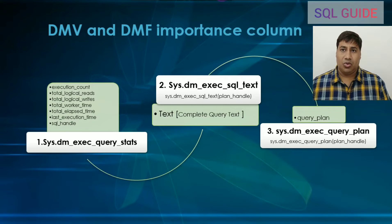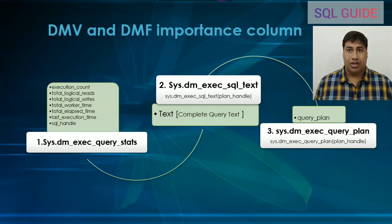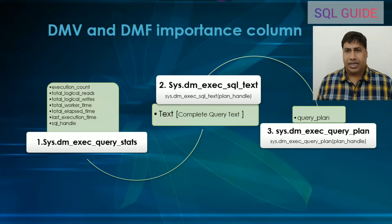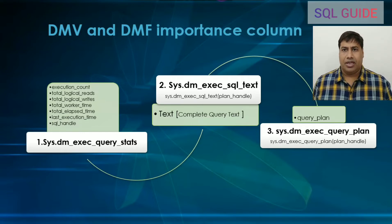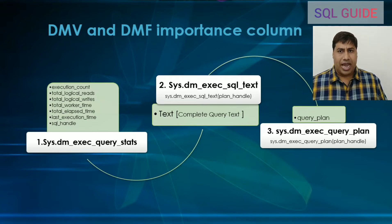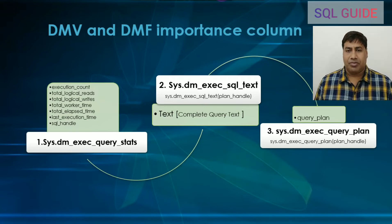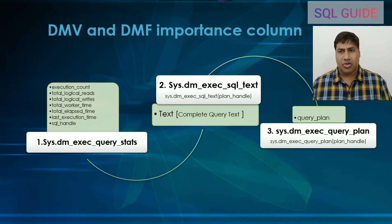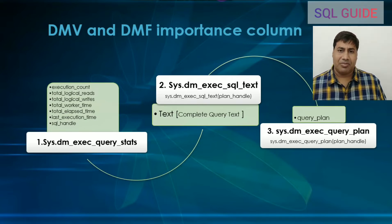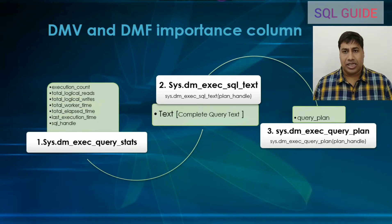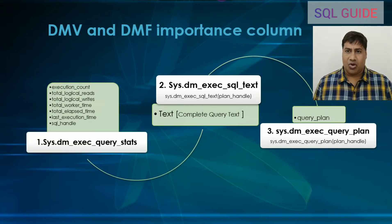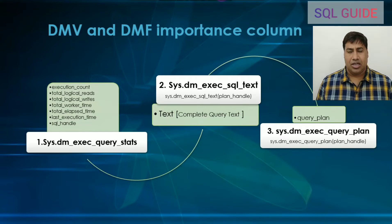Next, we need to know the important columns: execution count, total reads, total write time, and sql_handle — all available from the dynamic management view sys.dm_exec_query_stats. The complete query text comes from sys.dm_exec_sql_text, and the query plan column comes from sys.dm_exec_query_plan.